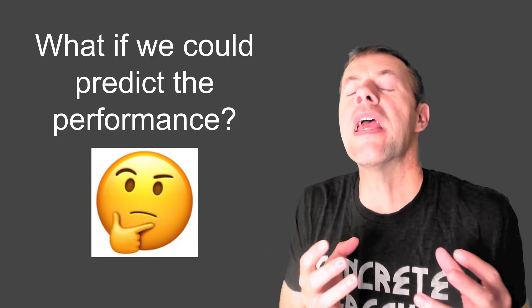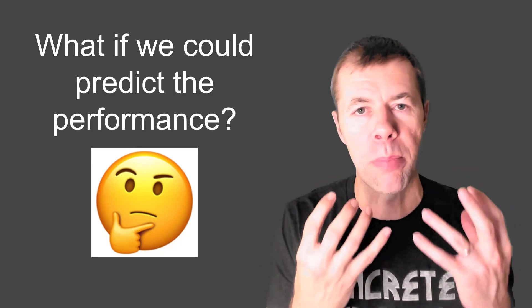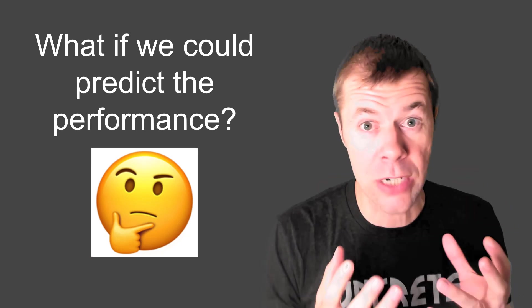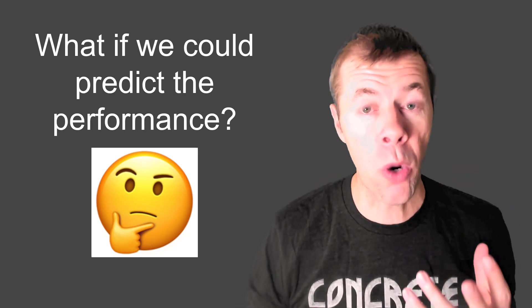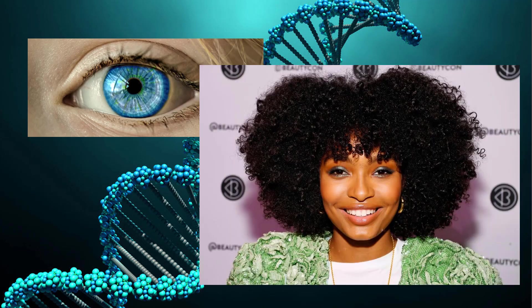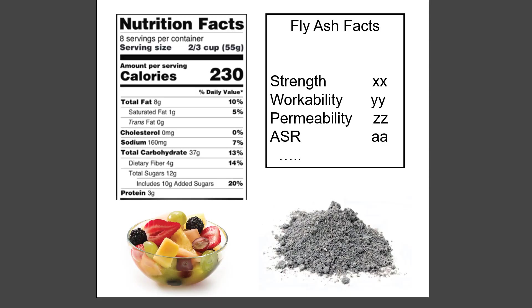But what if we could predict the performance of fly ash in concrete? That's actually something we can't do very well right now. It's like unlocking the DNA of fly ash. You know DNA — it tells us our eye color, our skin color, our hair color, all kinds of things about our body. What if we could figure that out for fly ash?